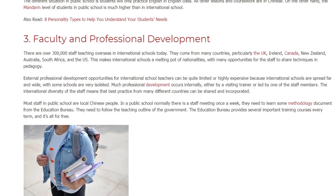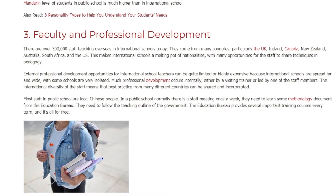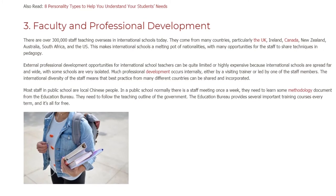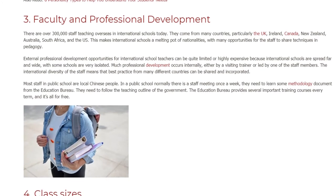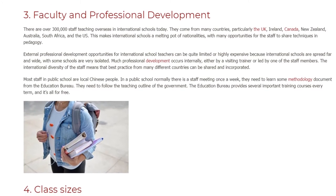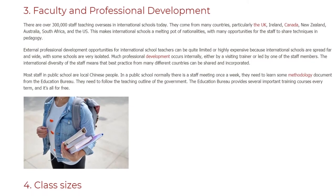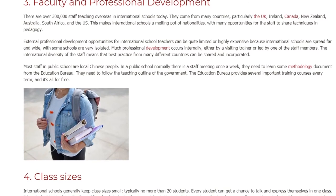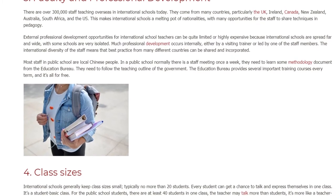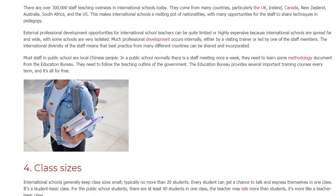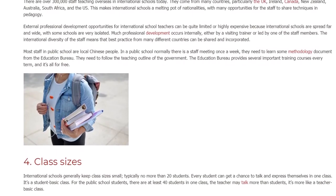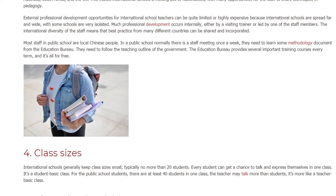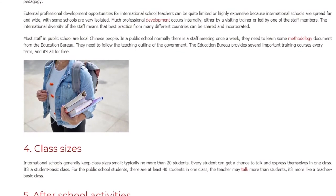The international diversity of the staff means that best practice from many different countries can be shared and incorporated. Most staff in public school are local Chinese people. In a public school, normally there is a staff meeting once a week where they learn methodology documents from the Education Bureau. They need to follow the teaching outline of the government. The Education Bureau provides several important training courses every term, and it's all for free.